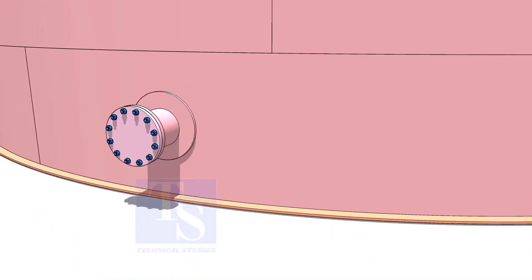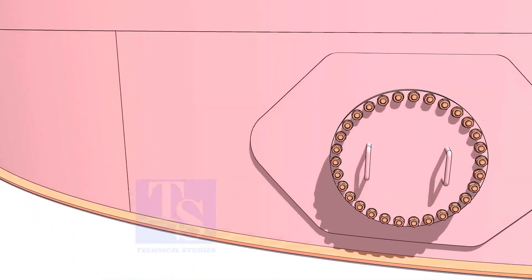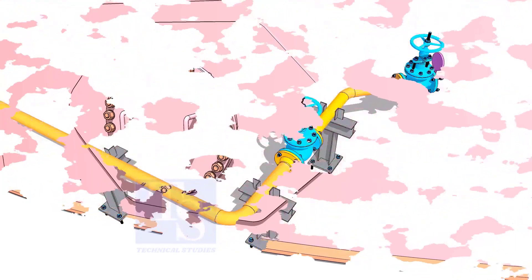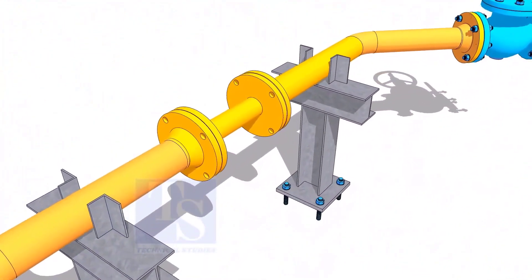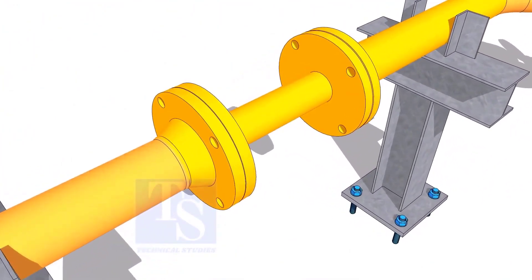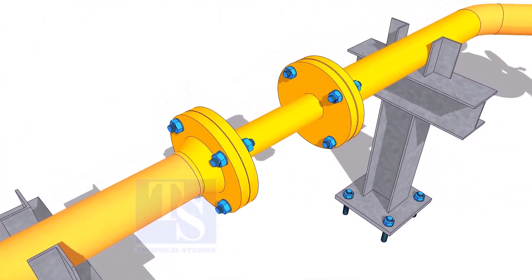Plate flanges are used for low-pressure services or to blind the nozzles of vessels, tanks, etc. for hydrotest purposes. Other use of plate flanges is making temporary spools to replace valves and equipment on a piping system.